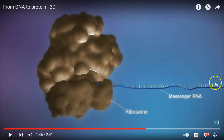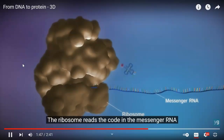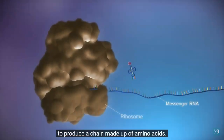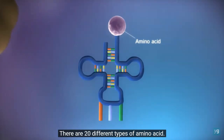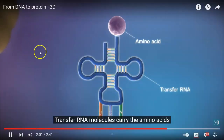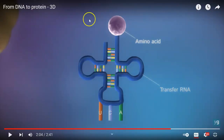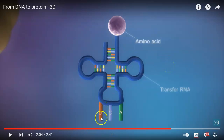So we have the messenger RNA and this is actually ribosomal RNA. There's one more kind of RNA that's going to come to match up some letters. The ribosome reads the code in the messenger RNA to produce a chain made up of amino acids. There are 20 different types of amino acids. Transfer RNA molecules carry the amino acids to the ribosome. This piece of RNA is called transfer RNA — you can remember the T because it's kind of a T shape — and it has three letters at the bottom that are going to match up to a piece of the message.